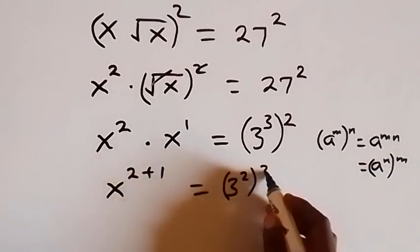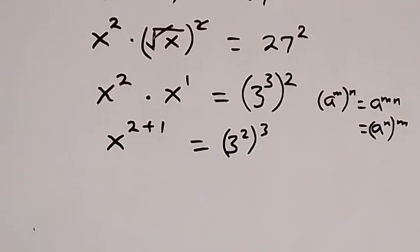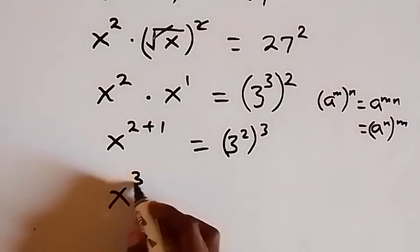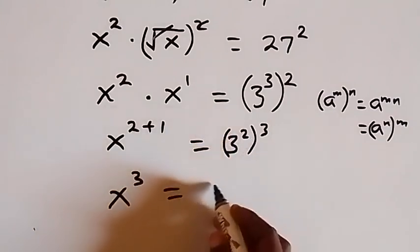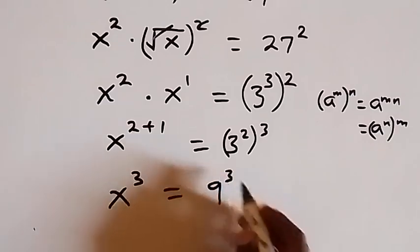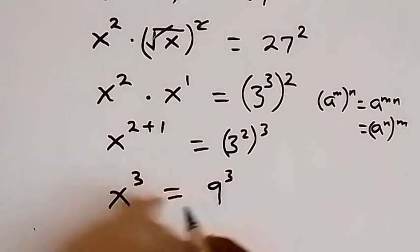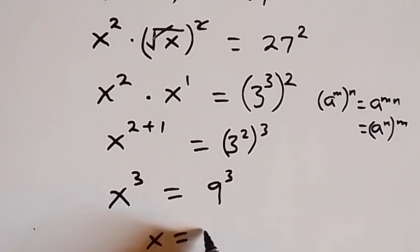x raised to power 3 equals 3 squared here, that's 9, which is raised to power 3. We have the same power, so we can conclude that x equals to 9. From this method, we have x equals to 9.